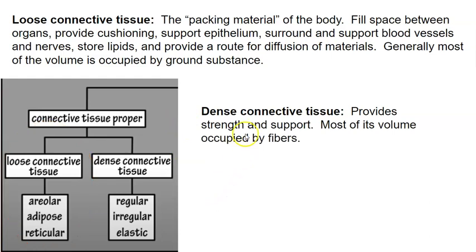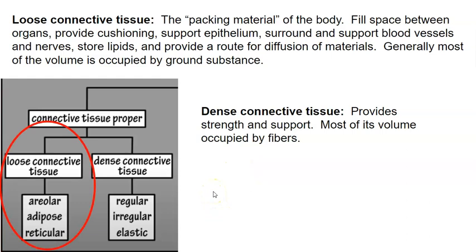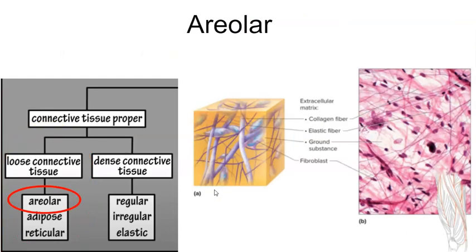Dense connective tissue provides strength and support. In this case, most of the volume is occupied by fibers — the collagen and elastic fibers. There are three types of loose connective tissue: areolar, also just called loose connective tissue; adipose tissue, which is fat; and reticular tissue.